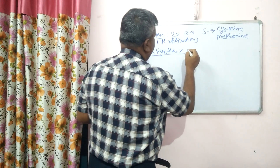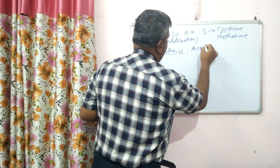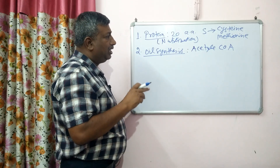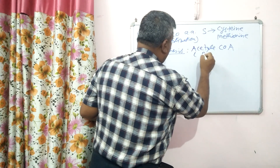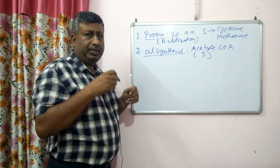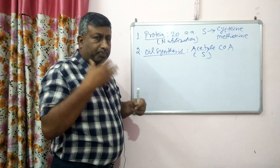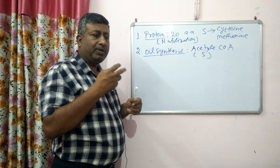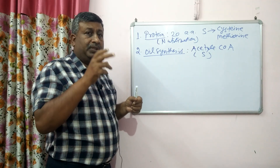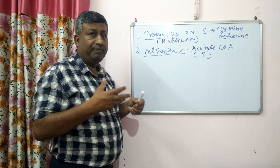This oil synthesis is due to sulfur. Oil synthesis is caused by acetyl coenzyme A. Acetyl coenzyme A is the precursor for oil synthesis, and sulfur is an important constituent of acetyl coenzyme A. So for acetyl coenzyme A to form, sulfur is essential — without sulfur it cannot be formed.